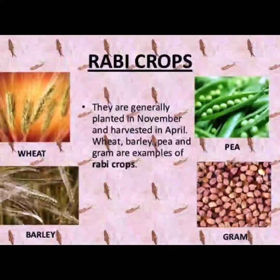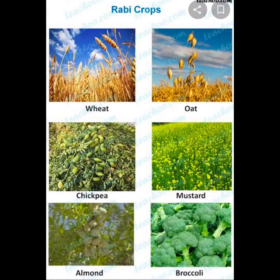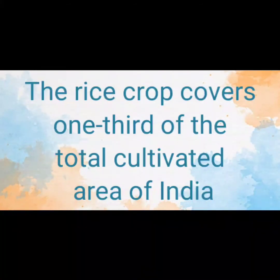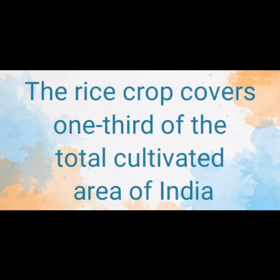I can show you some more examples of Rabi crops: wheat, oat, chickpea, mustard, almond and broccoli. These are the crops of Rabi season, meaning the crops of the season November to April. You know, dear children, the rice crop covers one third of the total cultivated area of India. This means that our Indian farmer produces rice much more than any other crop.